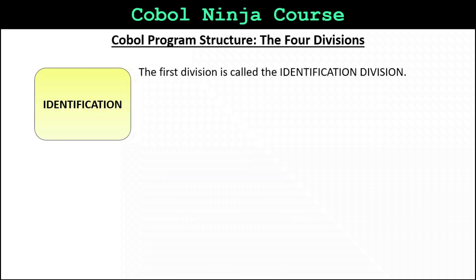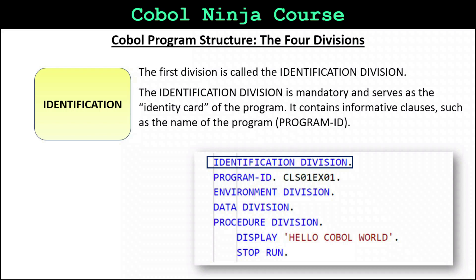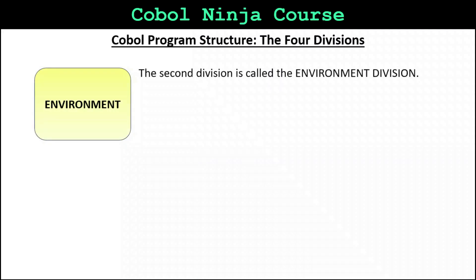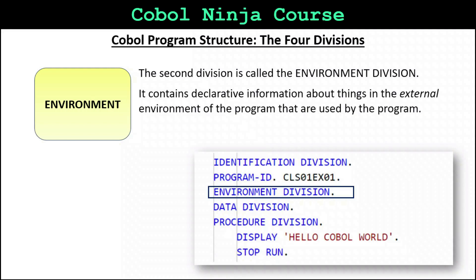The first division is called the identification division. It is mandatory and serves as the identity card of the program. It contains informative clauses such as the name of the program, the program ID. The second division is called the environment division. It contains declarative information about things in the external environment of the program. For example, if a COBOL program is going to access a database file, then the information about that file will be registered in the environment division.